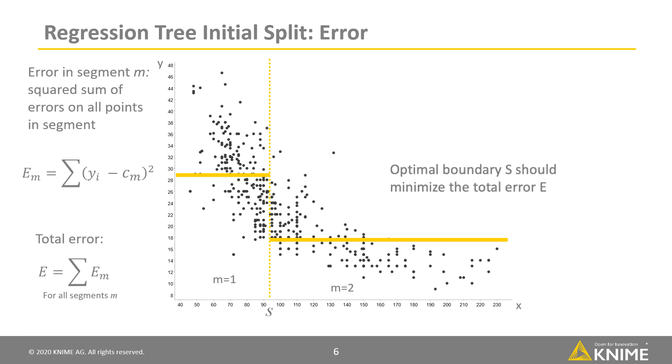Let's see the error of such a split. Within each segment m, the error can be calculated as the sum of Euclidean distances of all points to the mean value of y. The total error e is the sum of the errors in all segments m. We find s so that the total error is minimized.